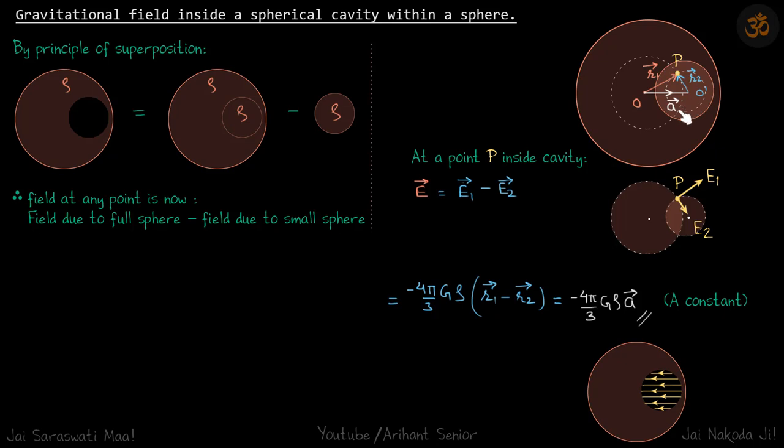The cavity is at a distance a. If you are writing in vector form, this is r1 vector, this is r2 vector, and the position of cavity center with respect to the sphere center is a vector. Basically, a vector plus r2 vector is r1 vector.